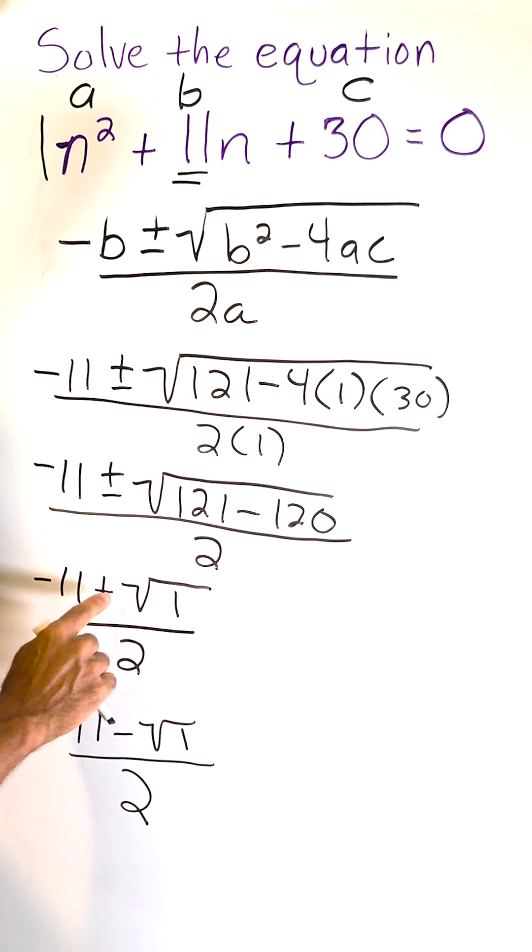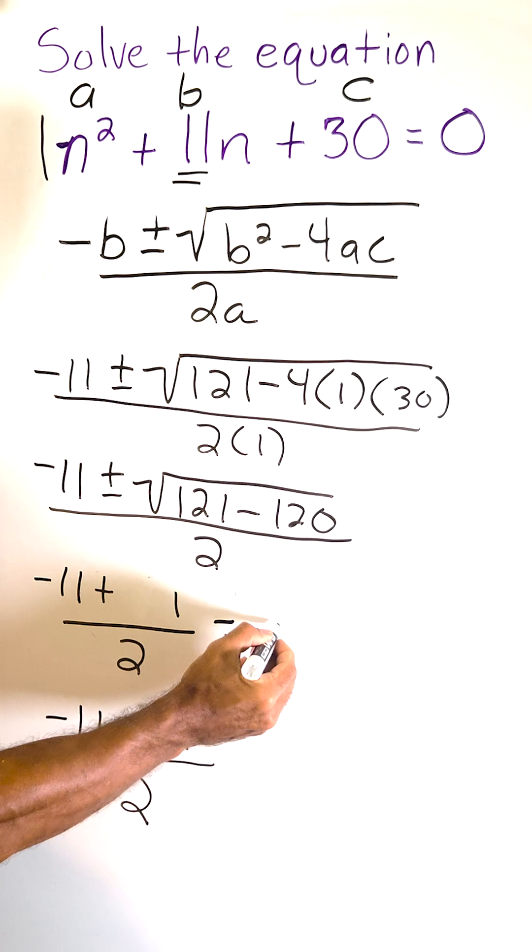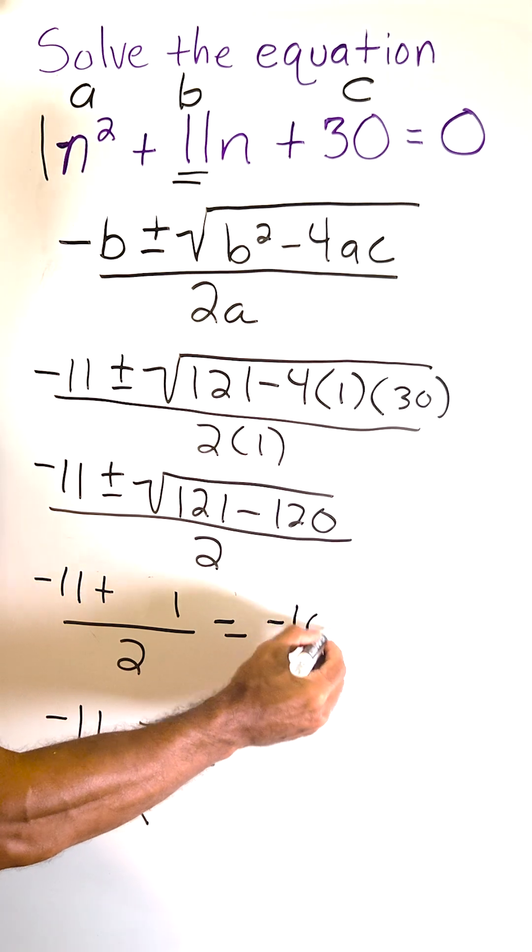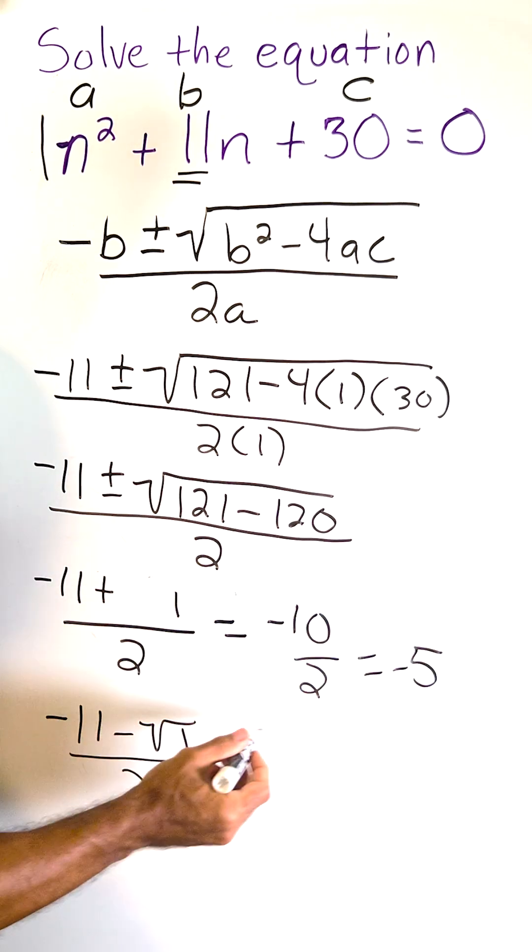Here we have the square root of 1, which is 1. So what we can do is just erase our radical right here. So now we have negative 11 plus 1, which is negative 10 divided by 2, which is equal to negative 5, which is one of our two solutions.